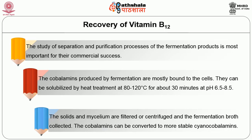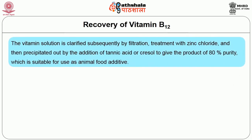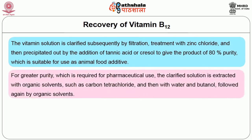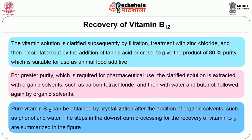The solids and mycelium are filtered or centrifuged and the fermentation broth can be collected. The corrinoid elements can be converted to the more stable cyanocobalamin form. The vitamin solution is clarified subsequently by filtration, treatment with zinc chloride, and then precipitated by the addition of tannic acid or cresol to give a product of 80% purity, suitable for use as an animal feed additive. For greater purity required for pharmaceutical use, the clarified solution is extracted with organic solvents such as carbon tetrachloride, then with water and butanol, followed again by organic solvents. Pure vitamin B12 can be obtained by crystallization after the addition of organic solvents such as phenol and water. The steps in the downstream processing for the recovery of vitamin B12 are summarized in the figure.